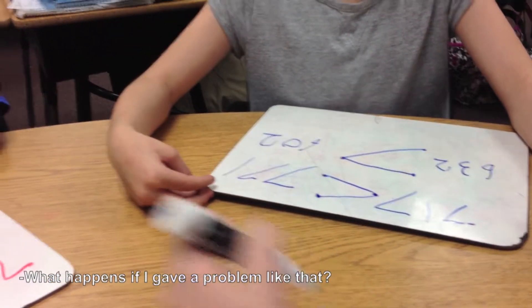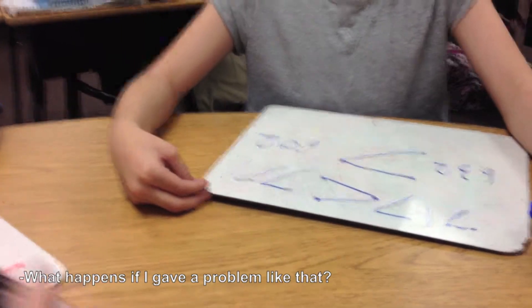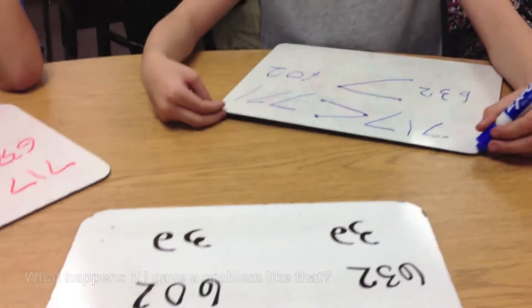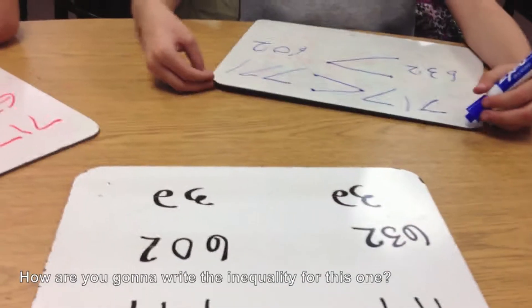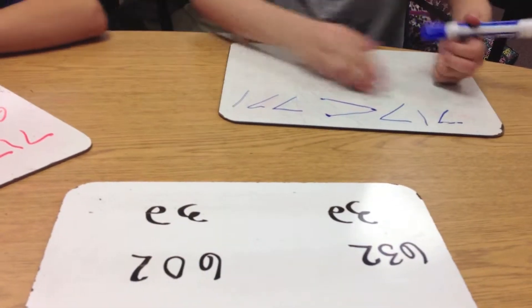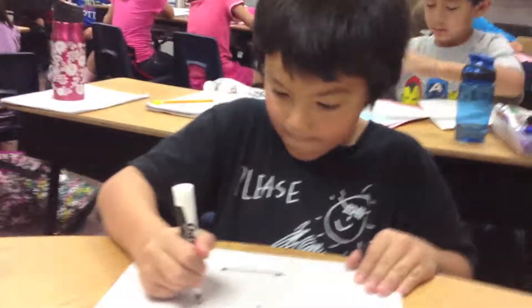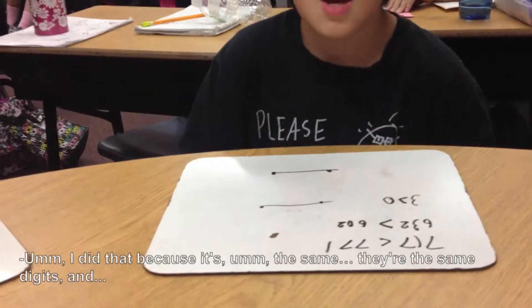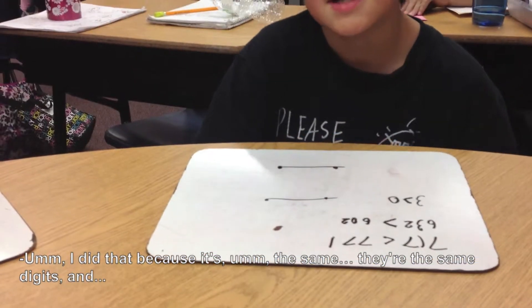What happens if I give a problem like that? How are you gonna write the inequality for this one? And why did you put two dots on both sides?